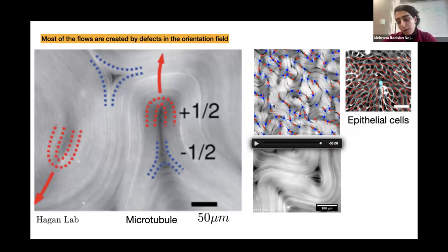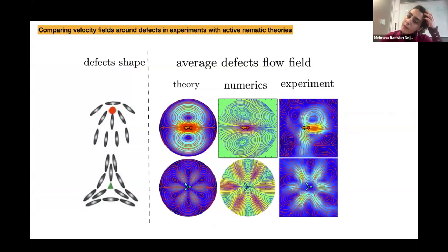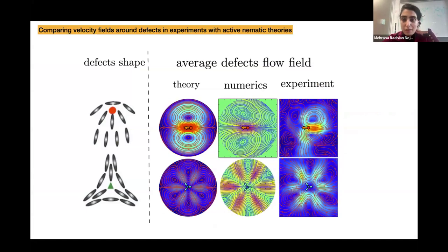To show that these active nematic theories do well in many cases, we can look at the average velocity of defects in experiments and compare them with the average velocity of defects in numerical simulations. We see that they match very well — they give the same orientation for the velocity around the defects and also produce the same vorticity field around the defects.